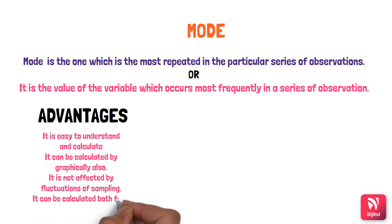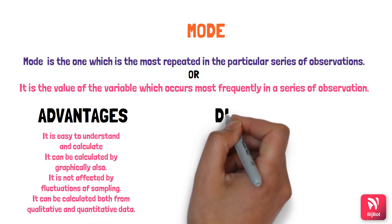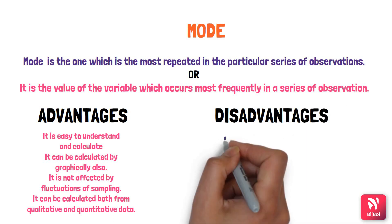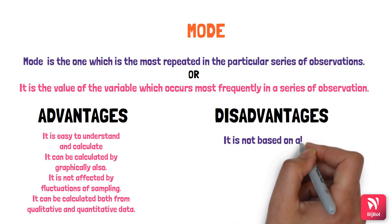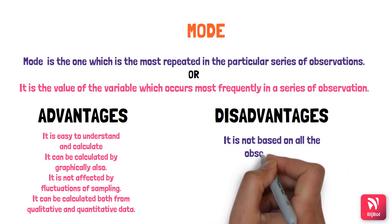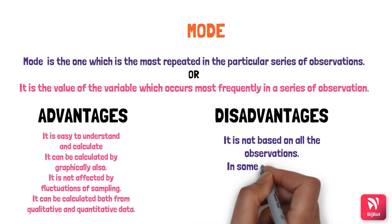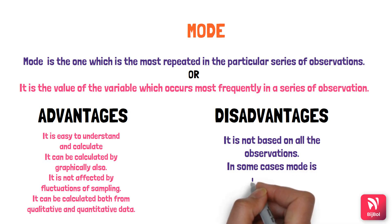The disadvantages of mode are that it is not based on all observations — similar to the median, you are confined to only those observations that occur most frequently. In some cases the mode is ill-defined.